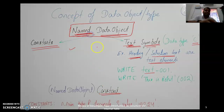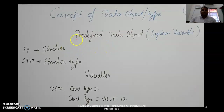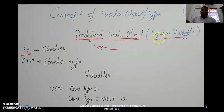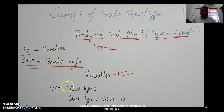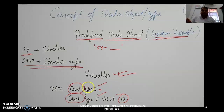So named data objects include constants and text symbols, while unnamed data objects are literals. Predefined data objects are system variables, starting with 'sy-', like sy-variable, which are already defined in the system. Variables — defined using keywords DATA or STATIC — are mostly used in programming. For example, COUNT is a variable of integer type with value 10, ending with a dot which represents end of the statement.